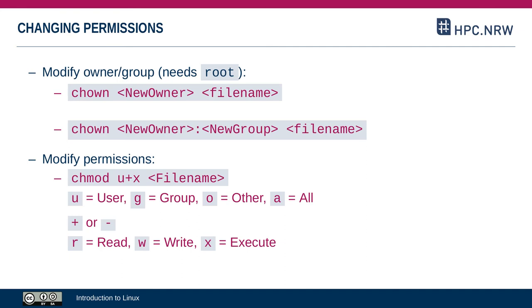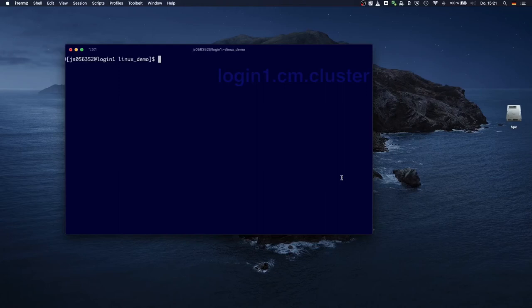To change permissions for an individual file or directory, you use the chmod command — you can do this for your own files even without root, and admins can do it for everyone. The chmod command has multiple ways to specify the new permissions. In the simplest form, you specify for whom you want to change it — for example 'u' for the user/owner — then whether you're giving or taking away the permission using '+' or '-', and which permission: read, write, or execute. You can also specify 'a' for all to set it for all three blocks at the same time.